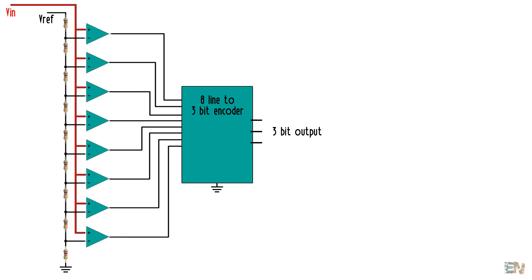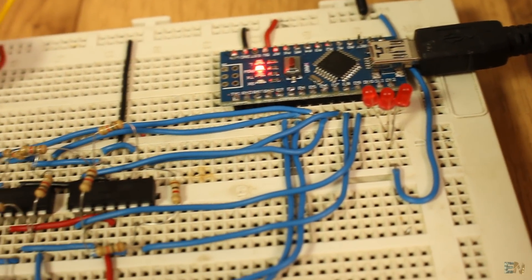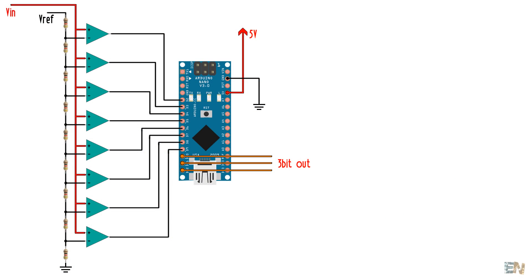The last element of a flash ADC is an encoder, which in our case will be the Arduino. I will read all the inputs from the comparators and give a binary output. So now that we know all this, let's take a look at the schematic of a flash ADC, in this case of 3 bits.